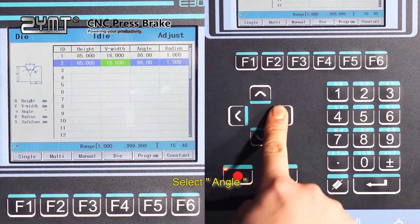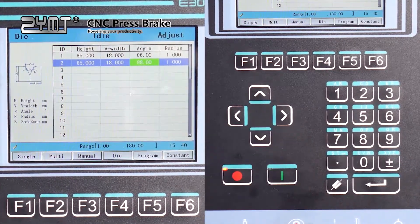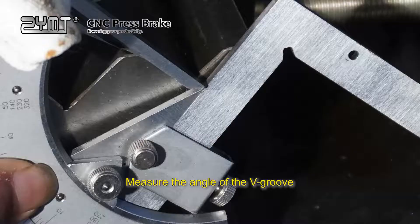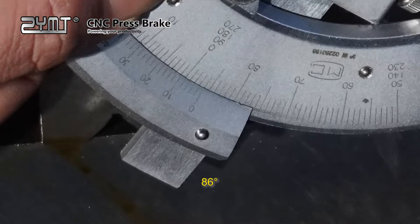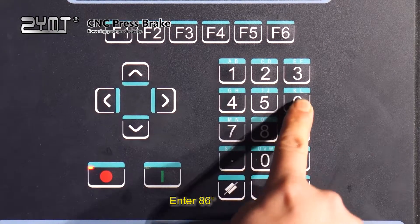Select angle. Measure the angle of the V groove. 86 degrees. Enter 86 degrees.